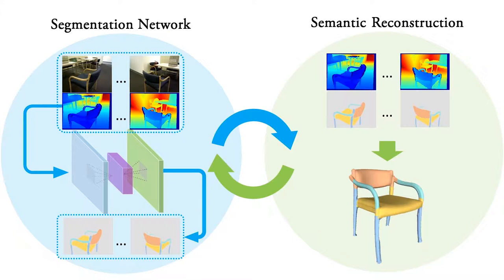Segmentation improves the quality of reconstruction by providing semantic labels, while the reconstruction in turn provides more training data to refine the neural network and improve the quality of the segmentation.